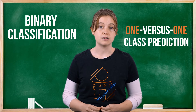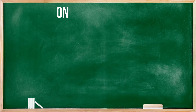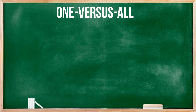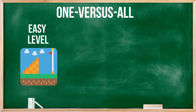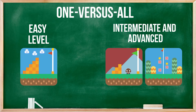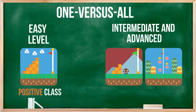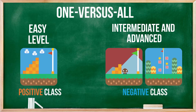So you need a way of being able to predict more than two classes. This is where one versus all is introduced. It treats one of multiple classes, such as easy level in a game, and predicts against all other classes, such as intermediate and advanced. This means the easy class is treated as the positive class, and all other classes — intermediate and advanced — are treated as the negative class, effectively turning this into a binary two-class classification.